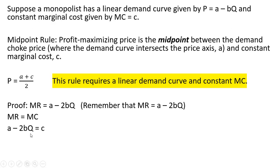We'll solve for Q. Subtracting c from both sides and moving this 2bQ to the other side, then dividing through by 2b, this would be the profit maximizing output.